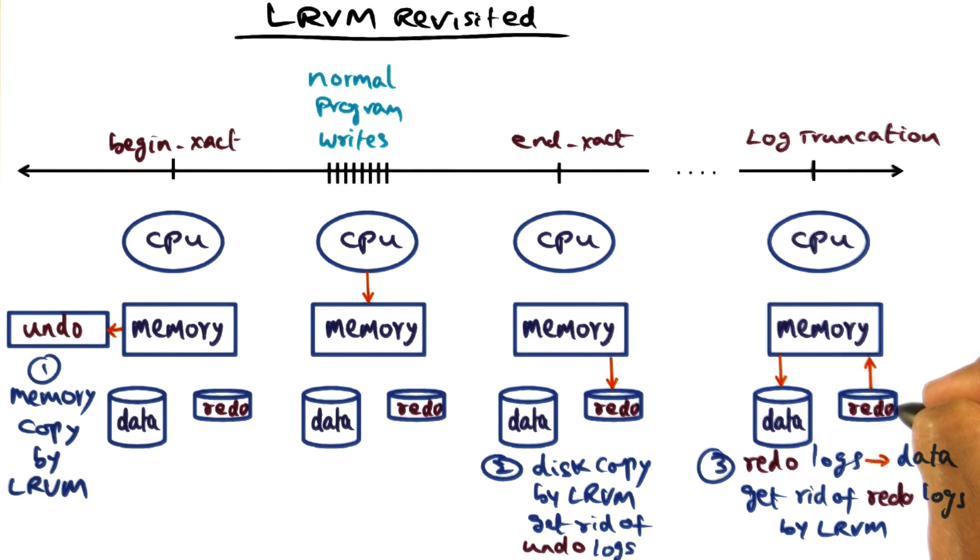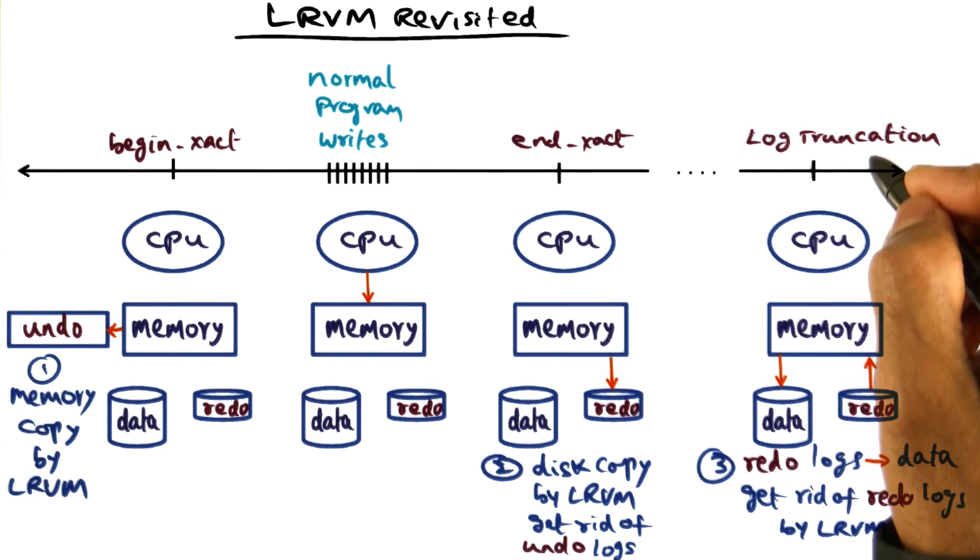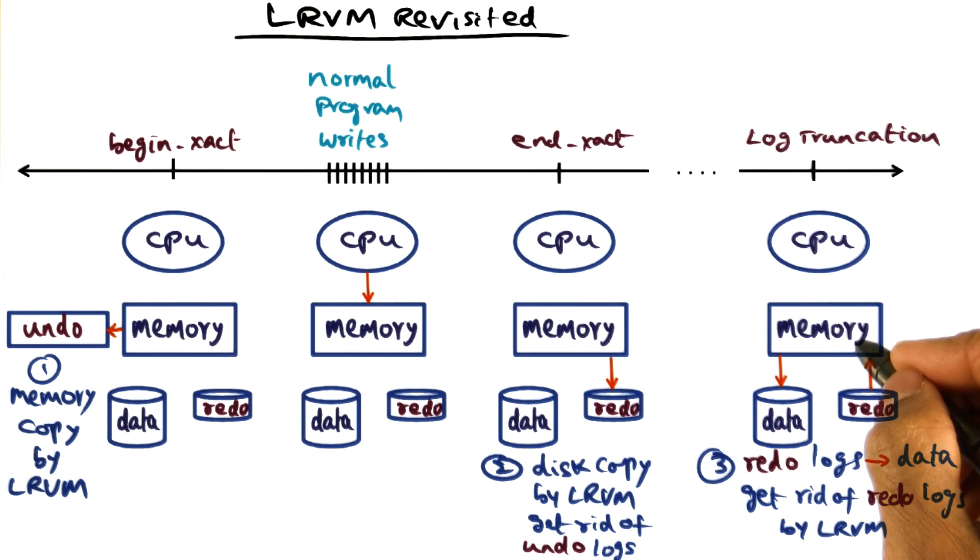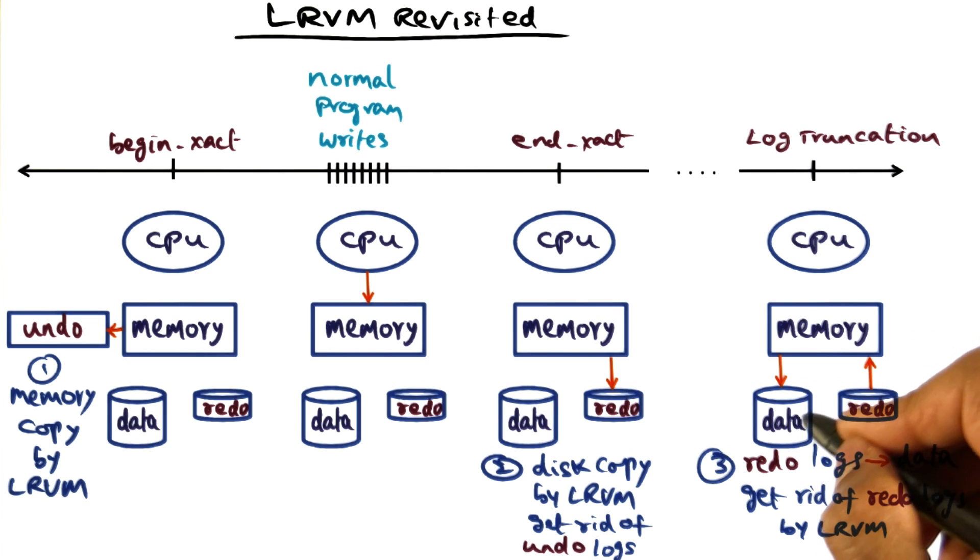And those changes had to be eventually persisted. Right now they're sitting in the redo log records. And what the log truncation part of the LRVM library does is to read the redo log records and apply them to the data segment and get rid of the redo logs.